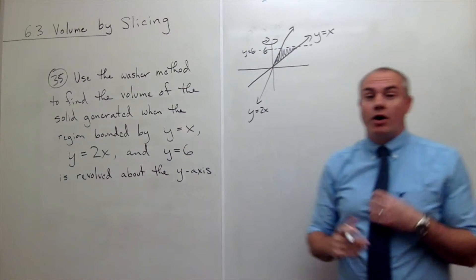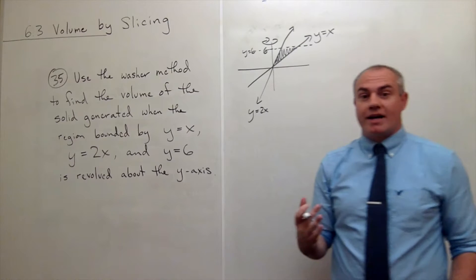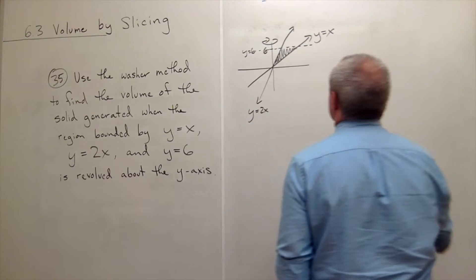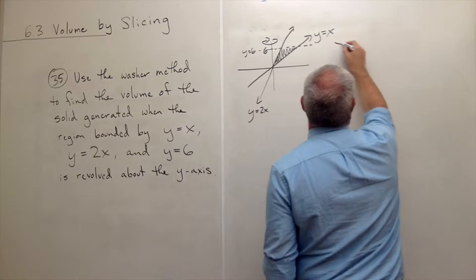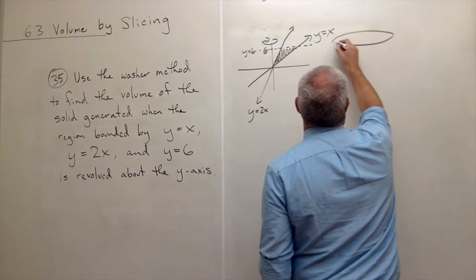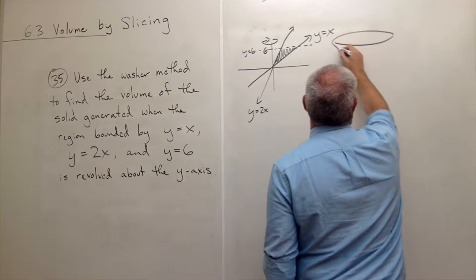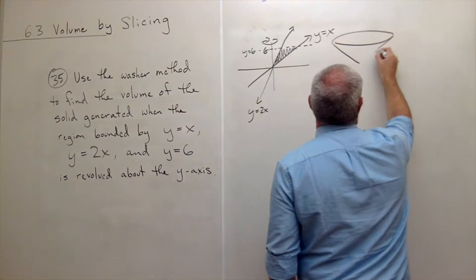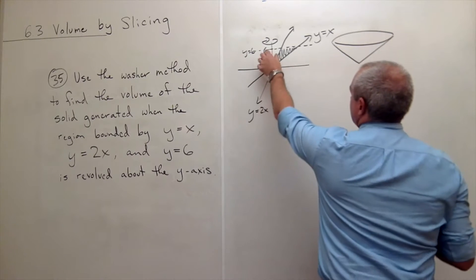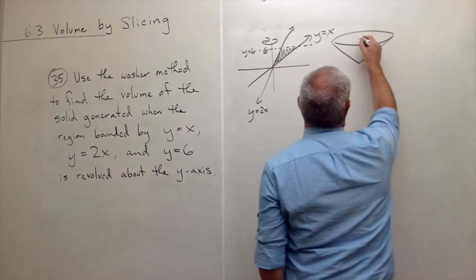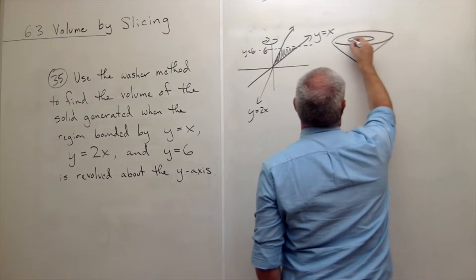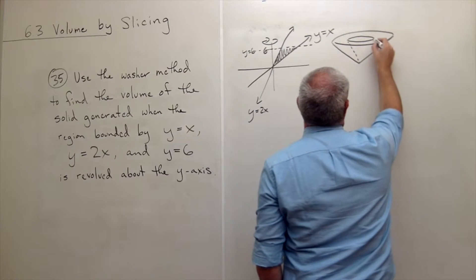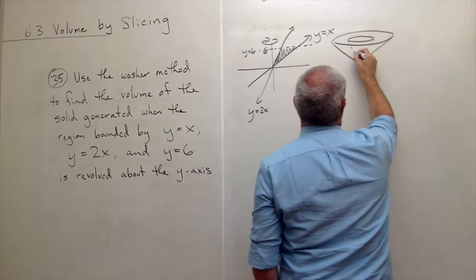When we revolve something like that around the y-axis, what's the shape going to look like that we generate? Well, first of all, it looks like a large cone with a smaller cone cut out of the middle.